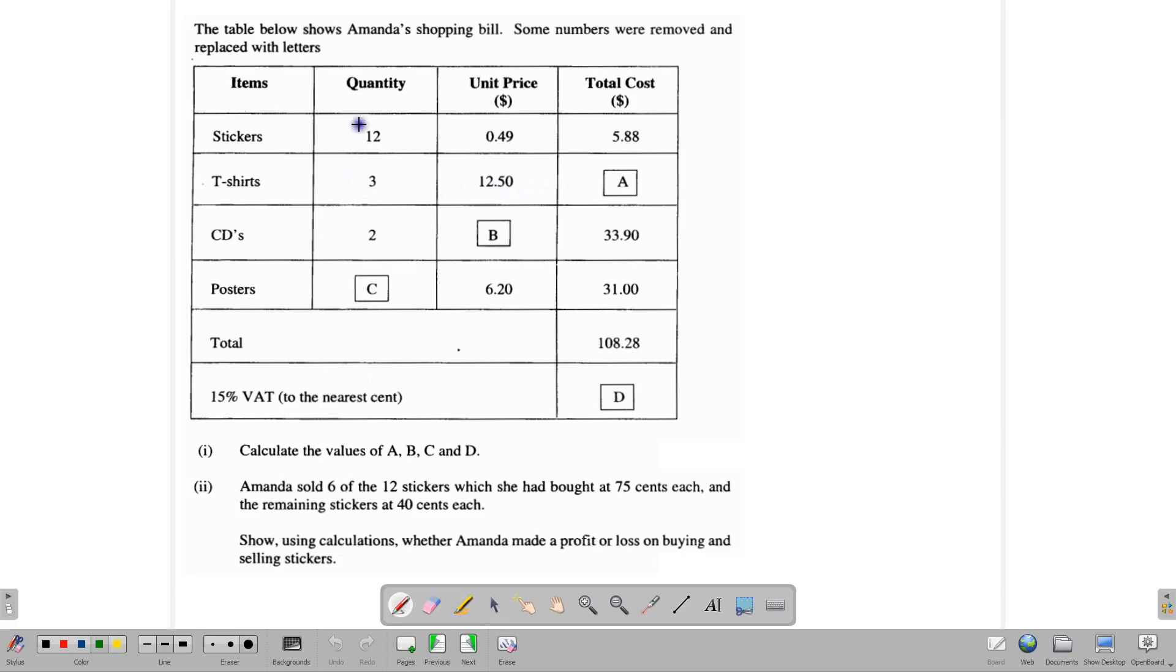The value of A here, quantity, unit price, total. So the stickers is worked out already. The t-shirts, the cost of the t-shirts would be 3 times 12.5. So let's write that in. A is equal to 3 times 12.5, and that gives us $37.50.